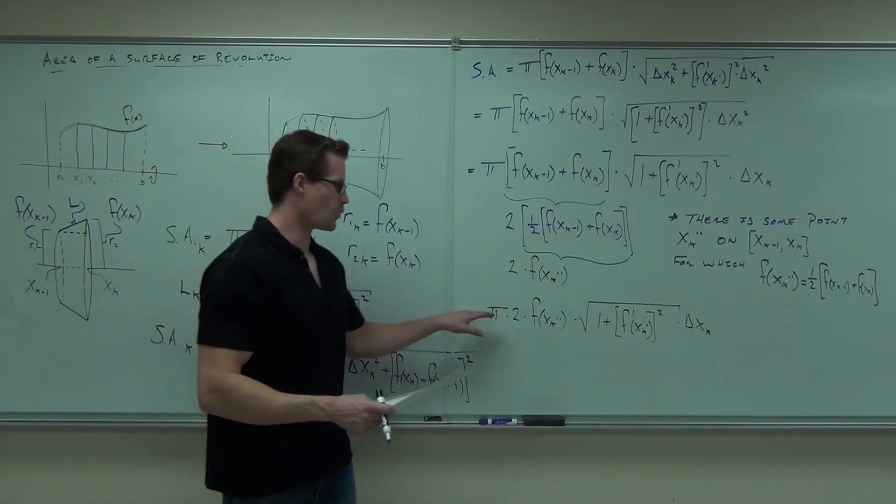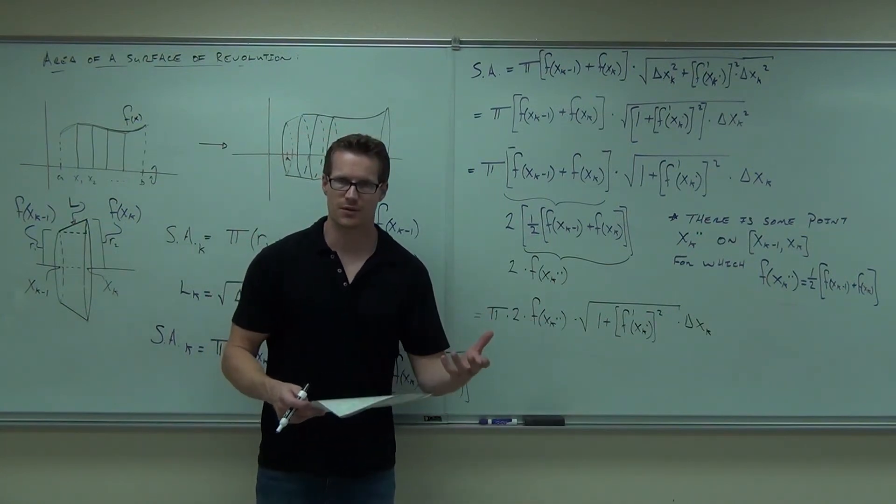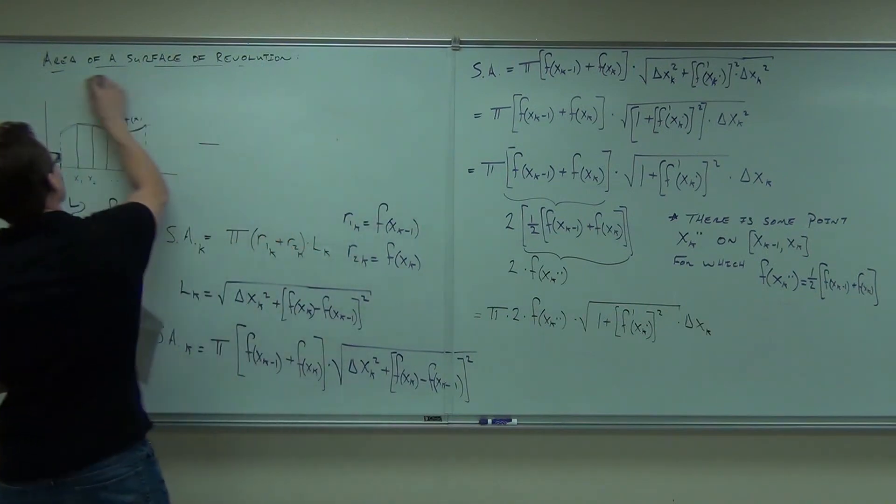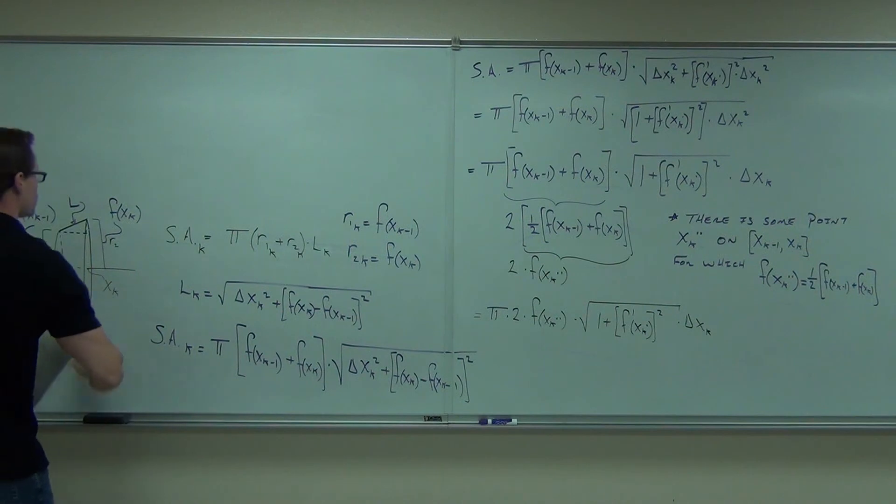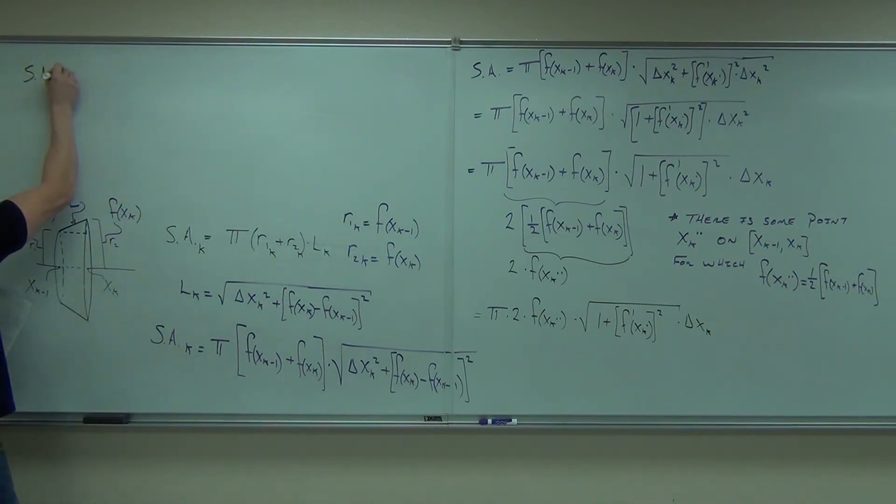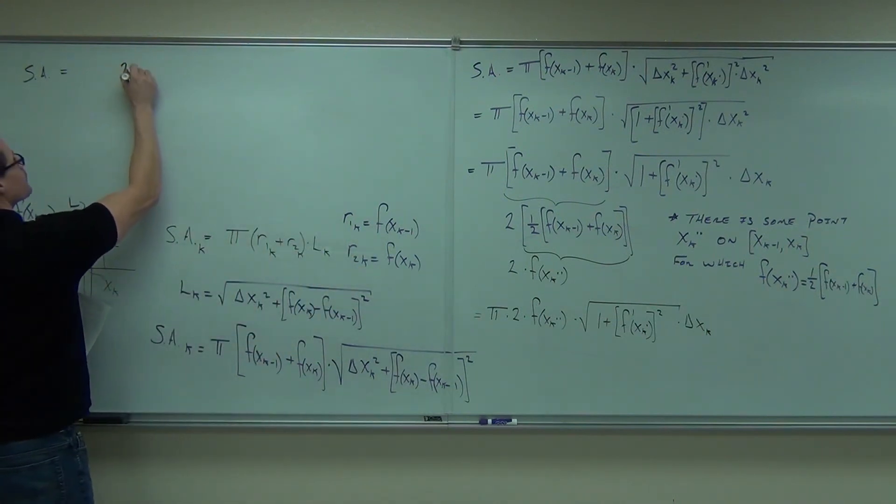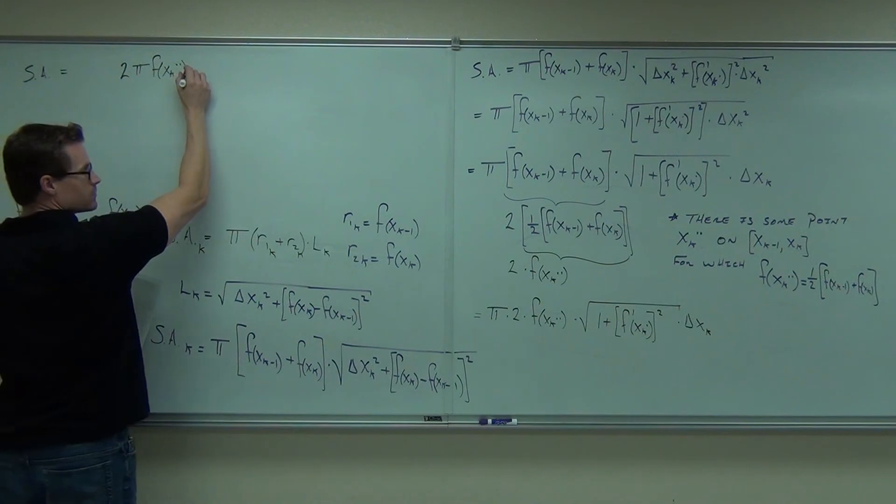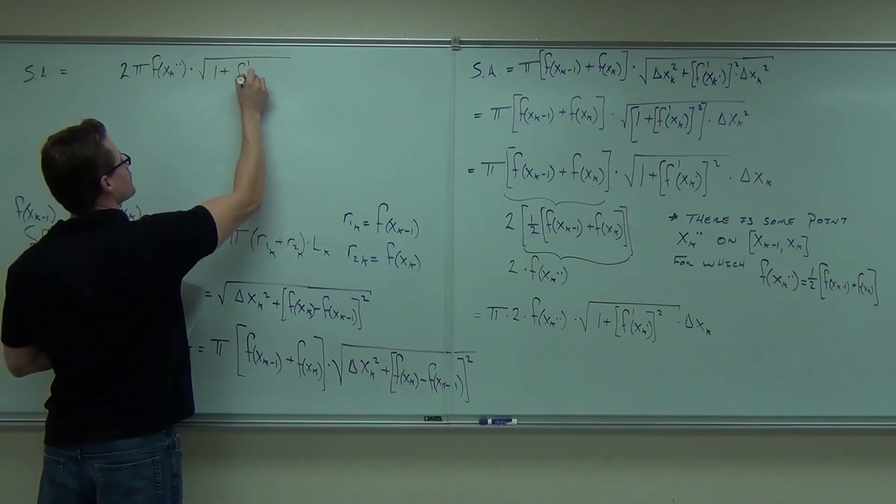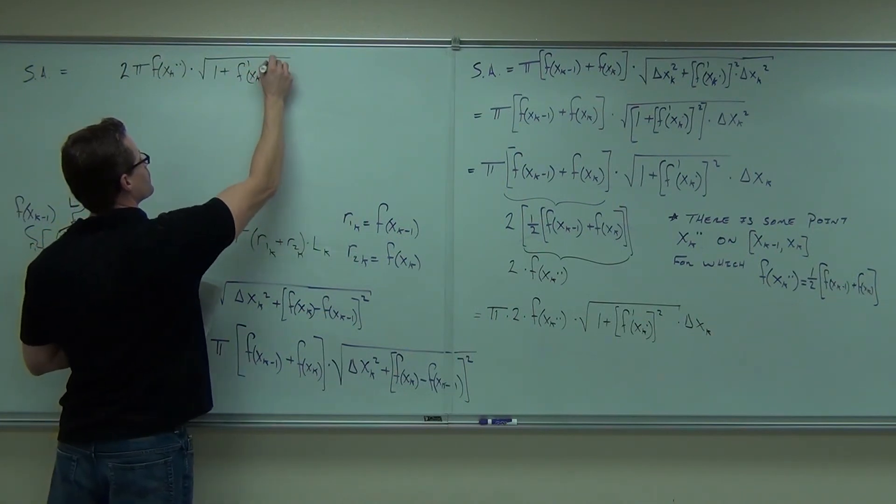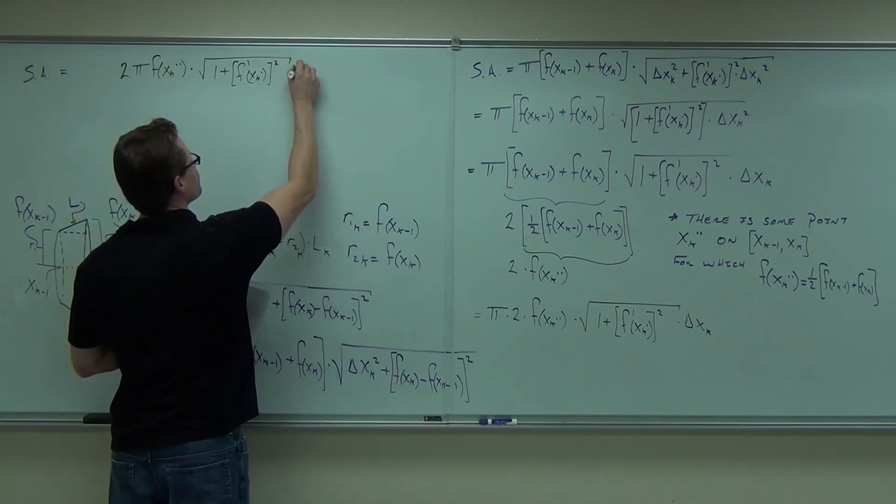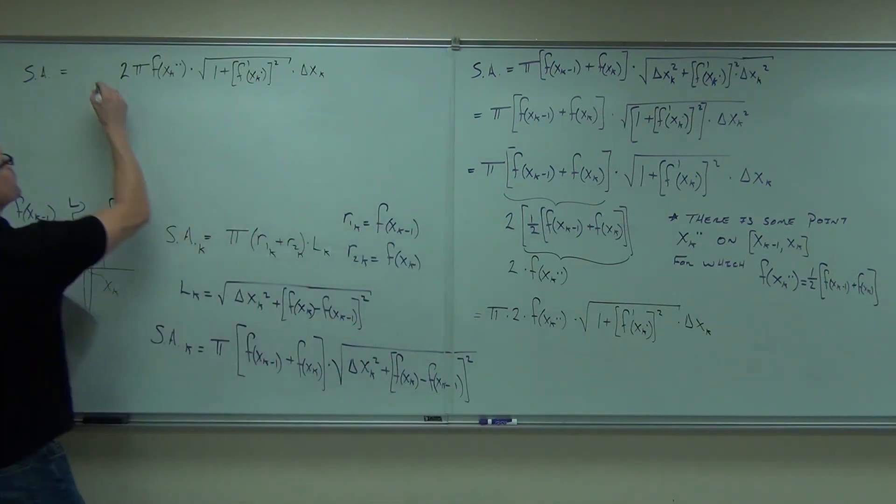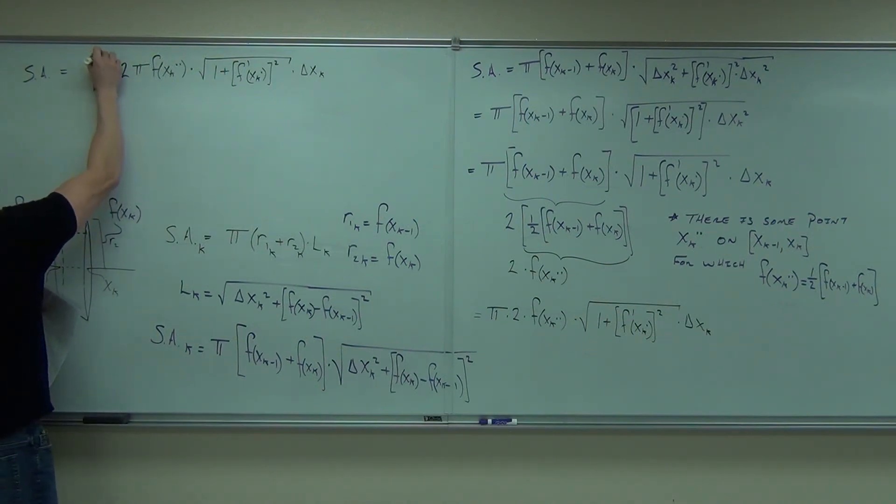Notice that this is just the approximation for one of them, just for the kth frustrum. Now, in order to get all of them, we're going to add them together. So this was one of them. That's one individual frustrum. To find all of them added together, add them all up.